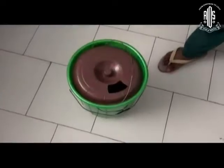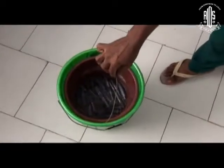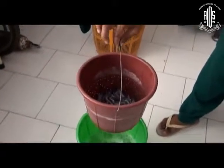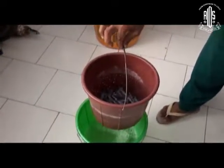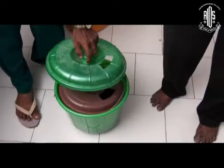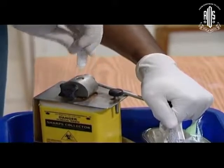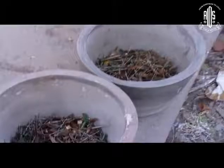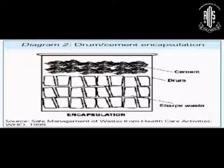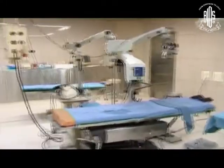Here is a practical method for your clinic: make a double-bucket with a sieve in it and drop your syringes and needles into it. The solution inside is a disinfecting fluid. After disinfecting, cut the needle, and place the needles separately in a small cement container buried deep — that is the safest way to do it.